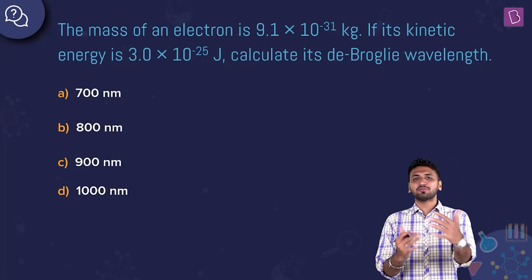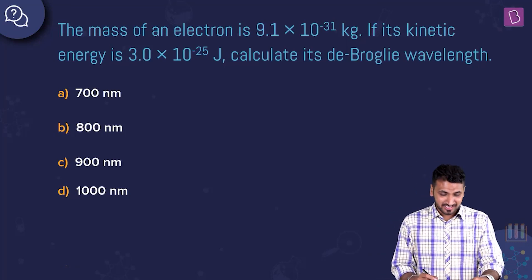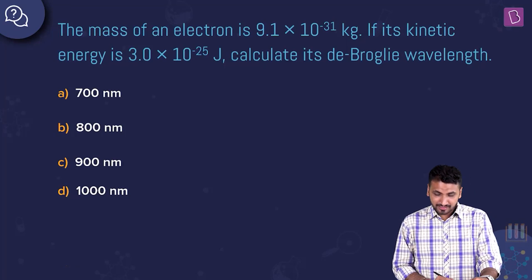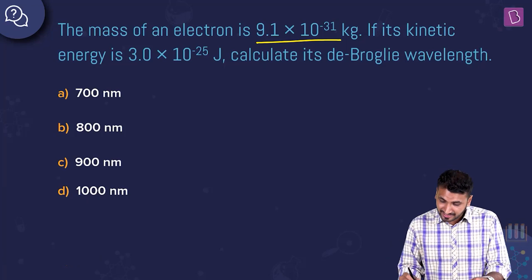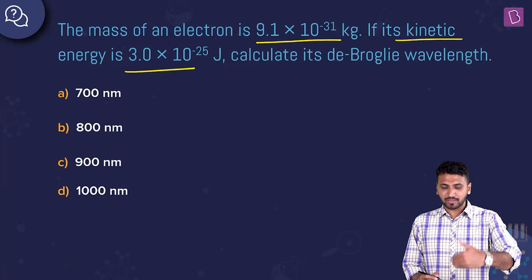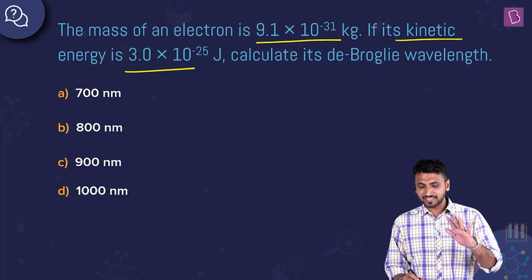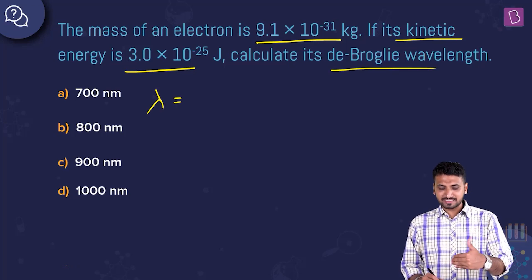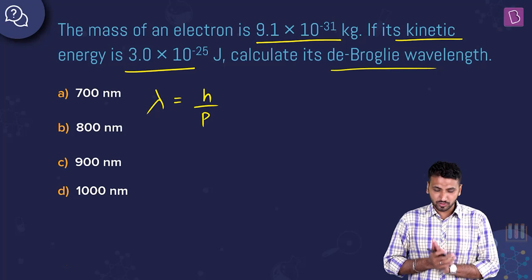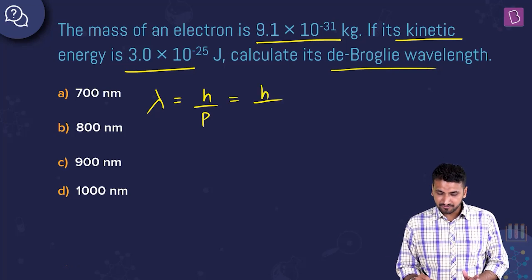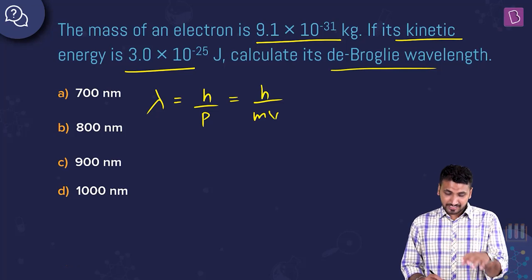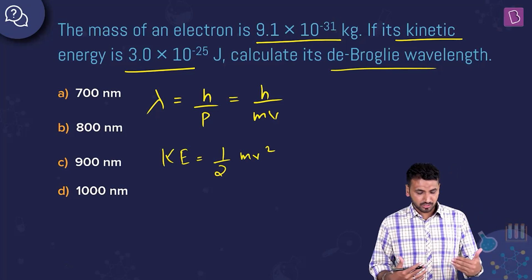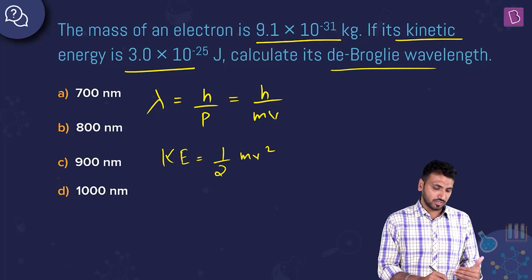Now let's calculate De Broglie's wavelength. The mass of an electron is 9.1 × 10⁻³¹ kg and its kinetic energy is 3 × 10⁻²⁵ J. The formula for De Broglie's wavelength is λ = h/p, where p can be replaced with mv.